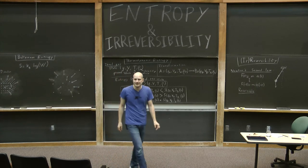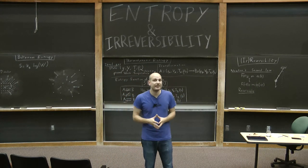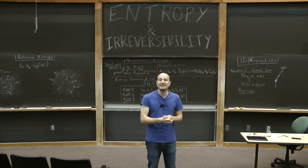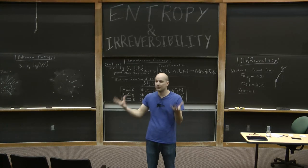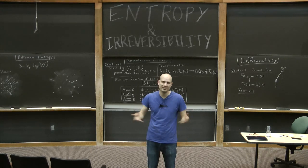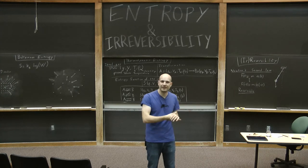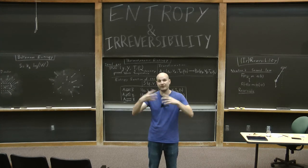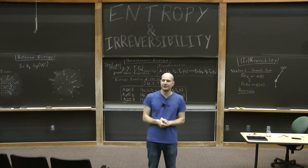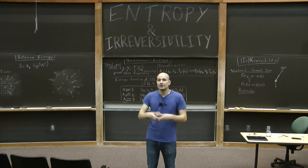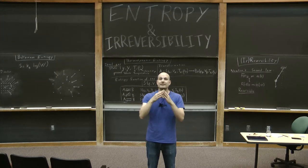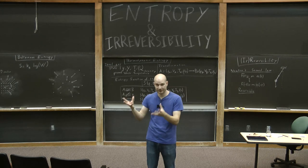So let's summarize what we've discussed today. We started out by talking about the fact that certain processes are irreversible. Now incidentally, we talked about the fact that this is somewhat surprising because if the world is made up of atoms and molecules, and atoms and molecules behave reversibly, how is it possible to see something irreversible? And we argued that the answer comes from the fact that there are very many atoms and molecules, and that effectively things can still behave irreversibly.